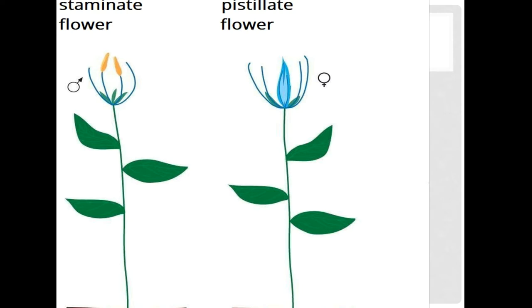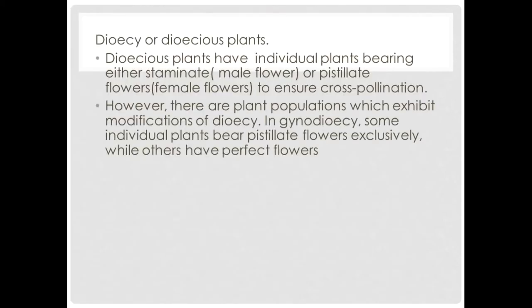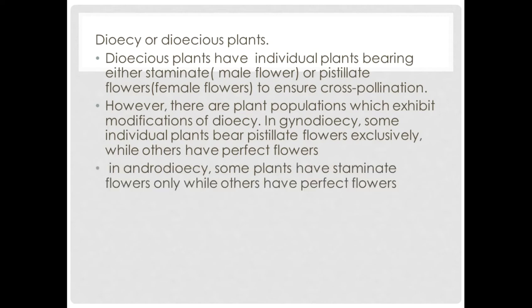Next we have dioecy, or dioecious plants. Dioecious plants have individual plants bearing either staminate or pistillate flowers to ensure cross-pollination. In gynodioecy, some individual plants bear pistillate flowers exclusively while others have perfect flowers — so a plant will have only the female part. In androdioecy, some plants have staminate flowers only while others have perfect flowers, meaning a plant will have only the male part while others may have a flower with both male and female parts.